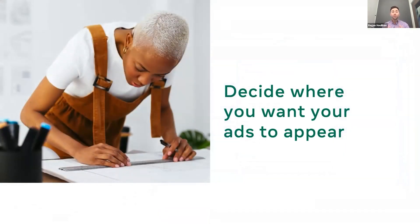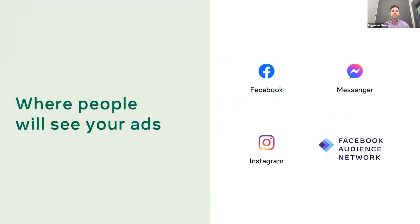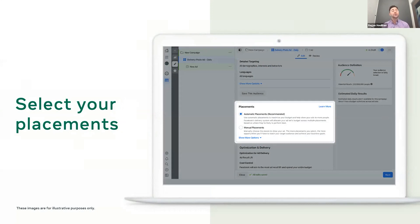Once you choose who will see your ad, it's time to decide where people will see your ad. In addition to Facebook, Instagram and Messenger, you can also run your ads on Audience Network — a collection of apps and mobile websites approved by Facebook where your ad can be displayed to reach more people. You can select manual placements or opt for automatic placements, which give the ad the opportunity to run on all available placements and apps. If this is your first time advertising, we highly recommend using automatic placements, as this offers more opportunities to reach more people and helps maximize your overall results.